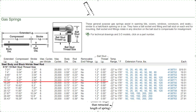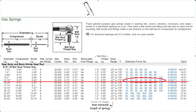This is the spring I will be using for the example in this video. The one I am choosing has an extended length of 13.19 inches and a compressed length of 8.27 inches — in other words, it has a 4.92 inch stroke. This size gas spring can be purchased with extension forces ranging from 15 to 120 pounds. Let's choose the 60 pound extension force for the example in this video.